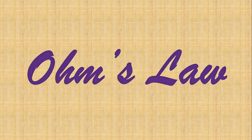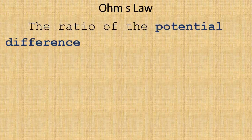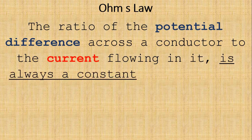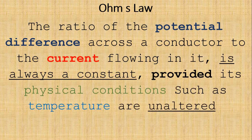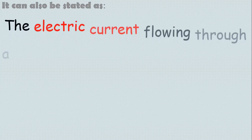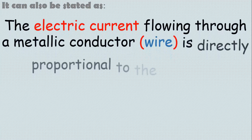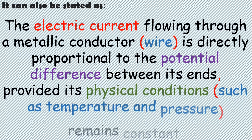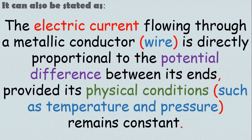Ohm's law. Ohm's law states that the ratio of the potential difference across a conductor to the current flowing in it is always a constant, provided its physical conditions, such as temperature, are unaltered. It can also be stated that the electrical current flowing through a metallic conductor is directly proportional to the potential difference between its ends, provided its physical conditions, such as temperature and pressure, remain constant.